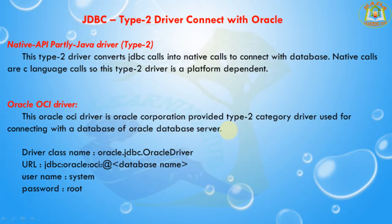In a Type 2 driver, JDBC API calls are converted into native C or C++ API calls which are queued to the database. These drivers are typically provided by the database vendors and used in the same manner as a JDBC-ODBC bridge.